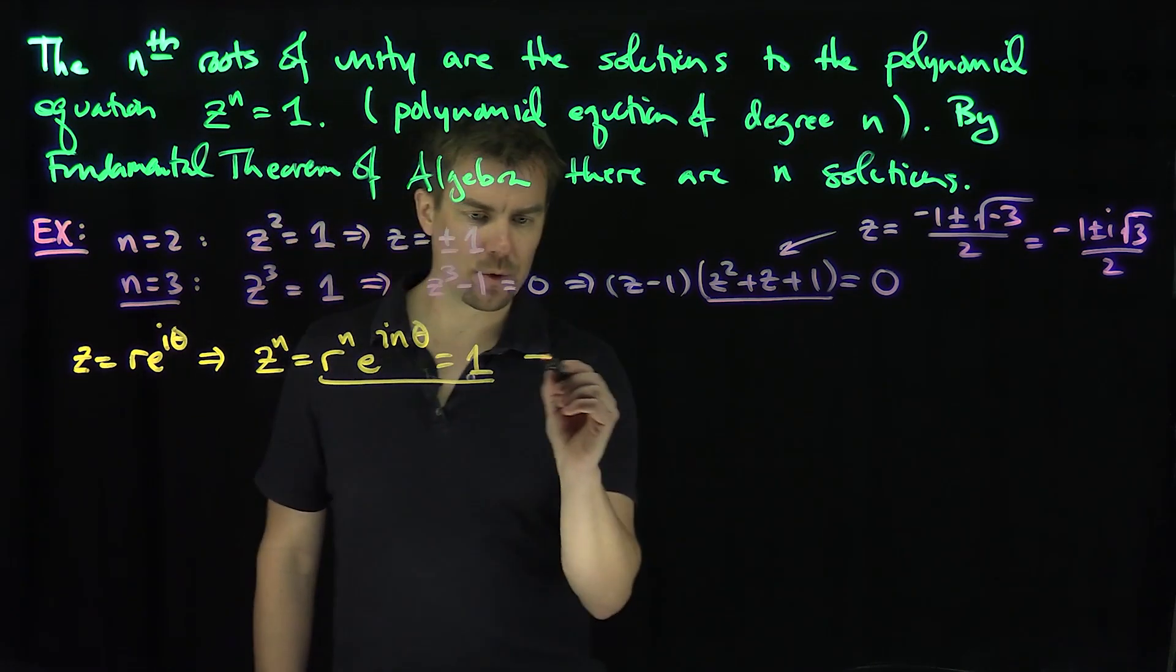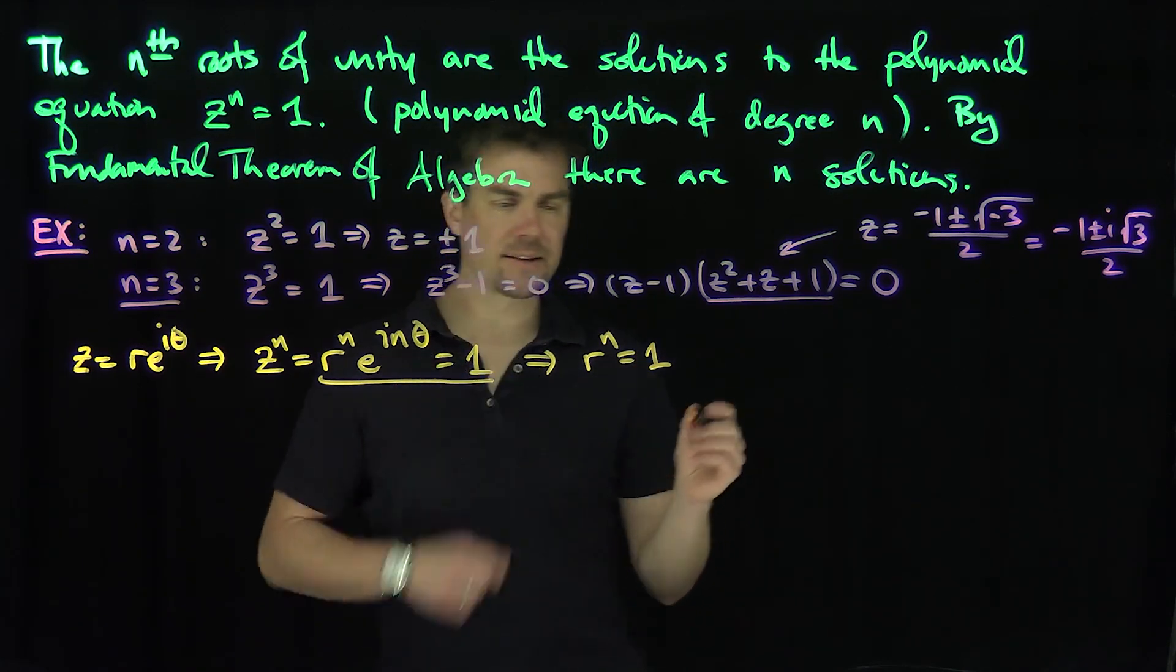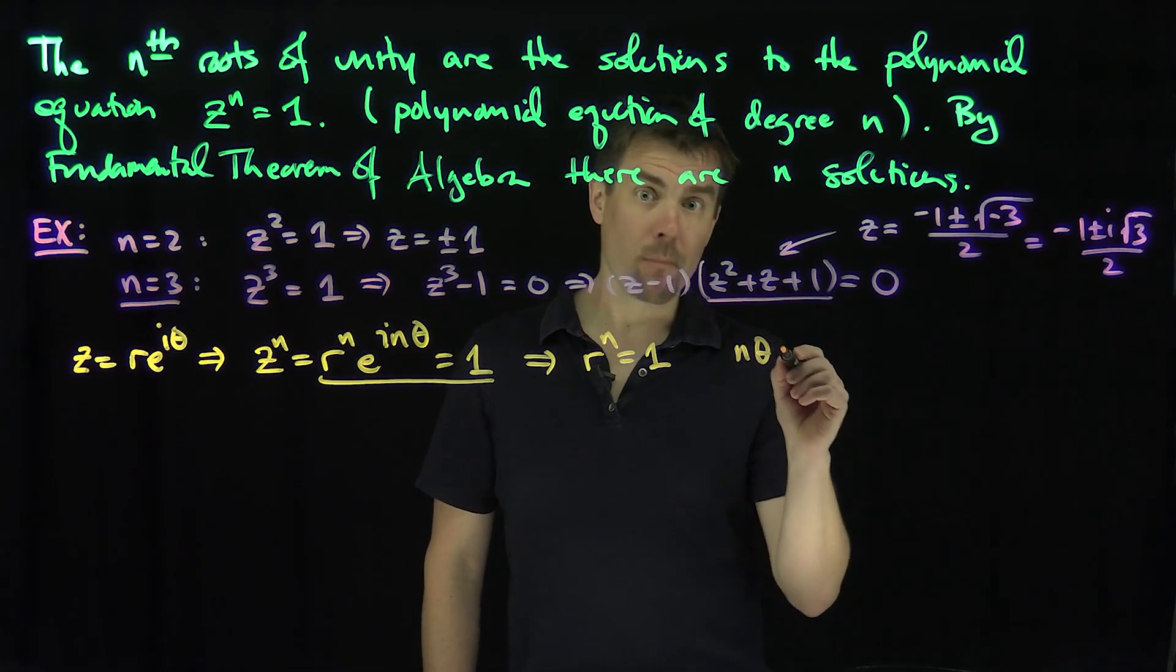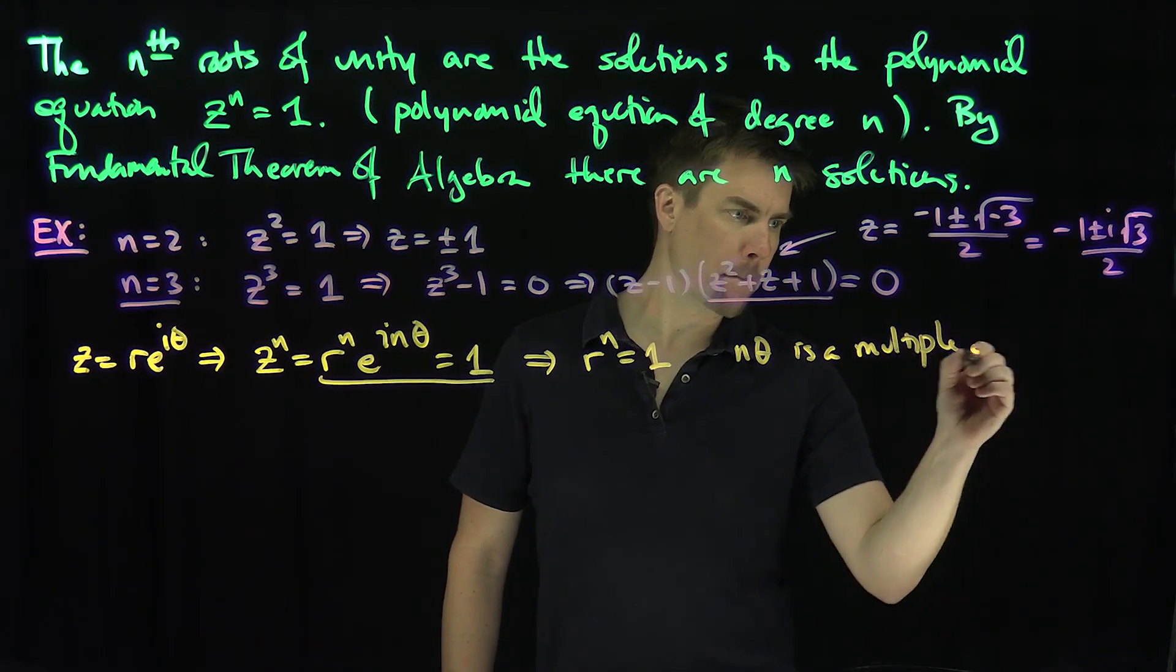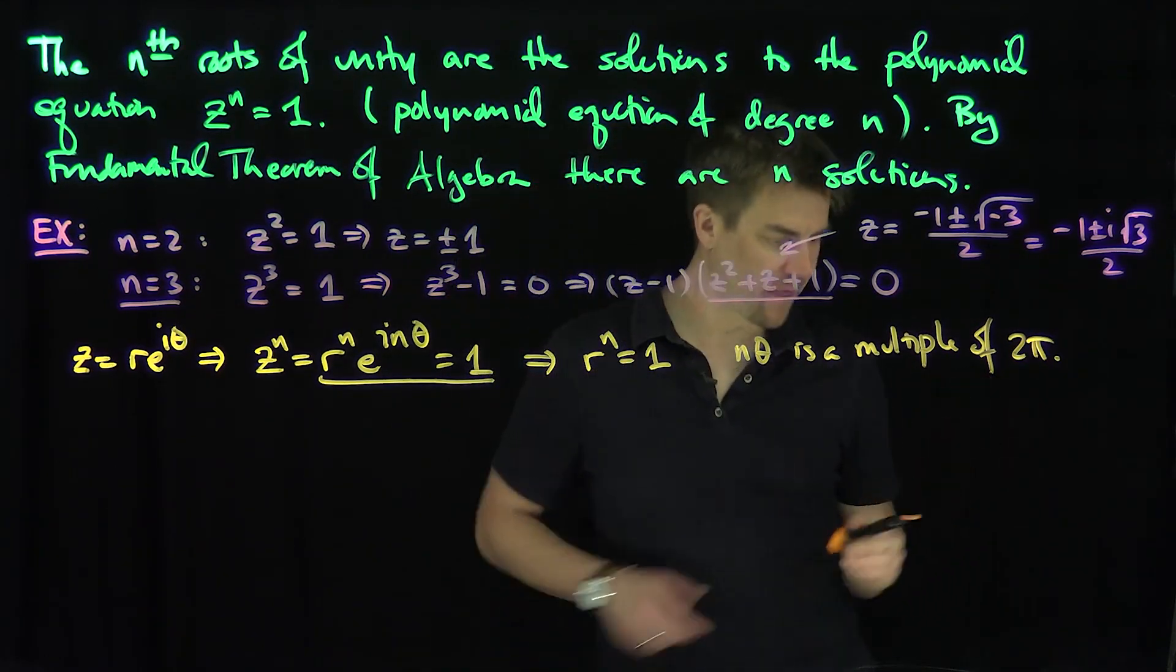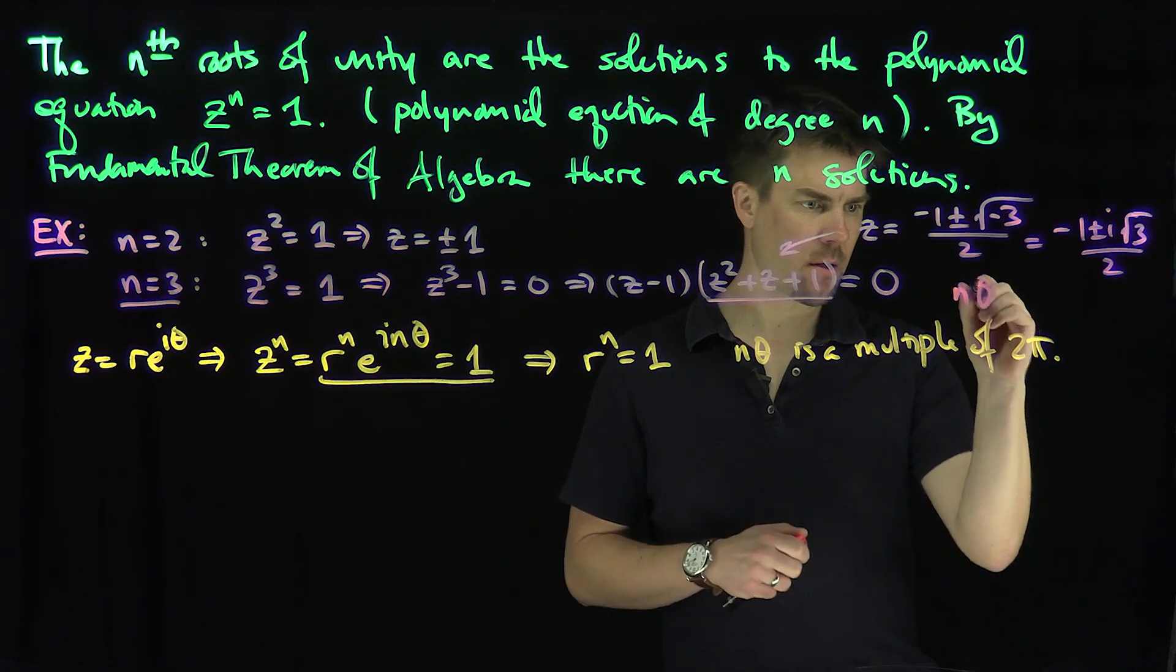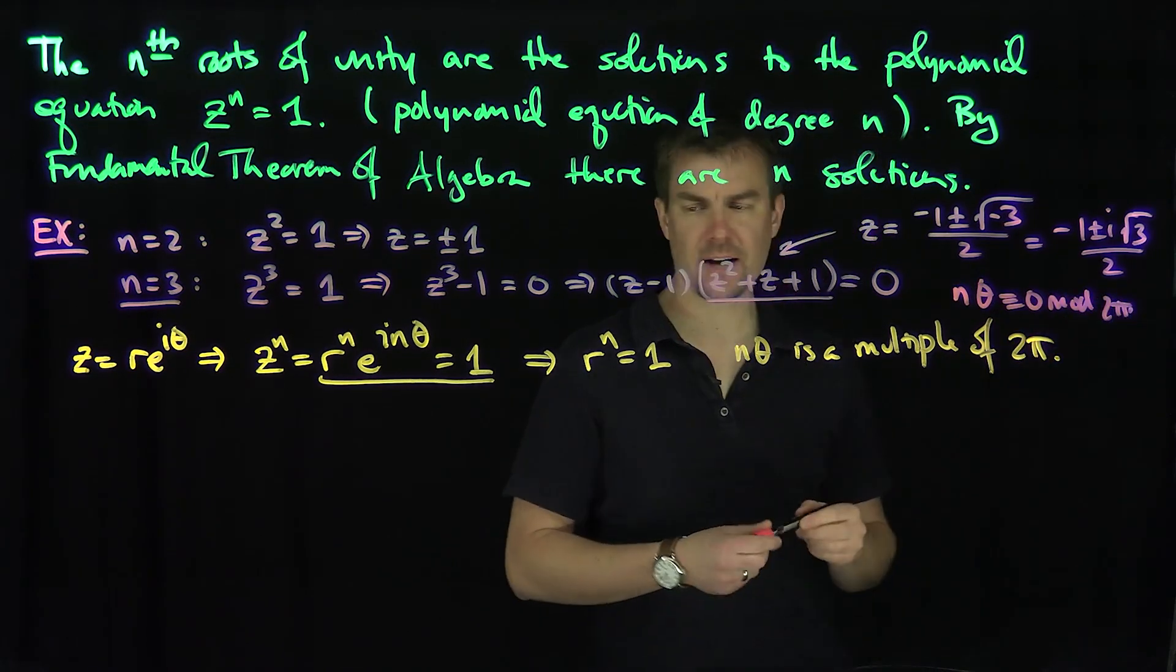Now what does that tell me? That tells me two things: that r to the n has to be equal to 1, and n times theta has to be a multiple of 2 pi. Or we can say that n theta is equivalent to 0 mod 2 pi.